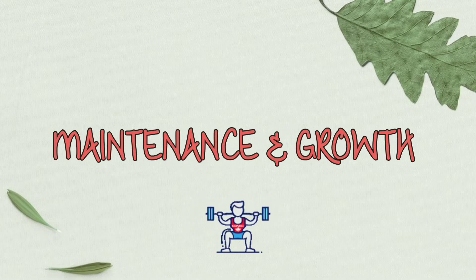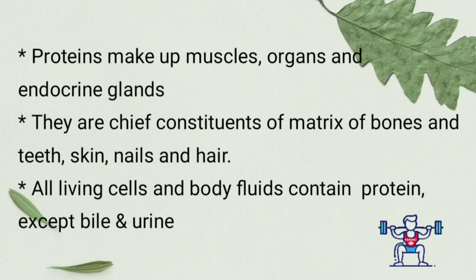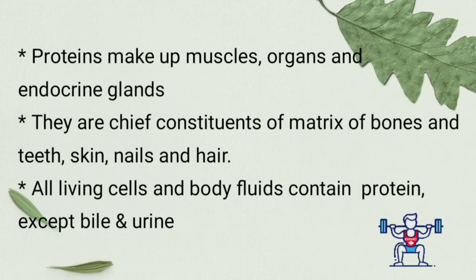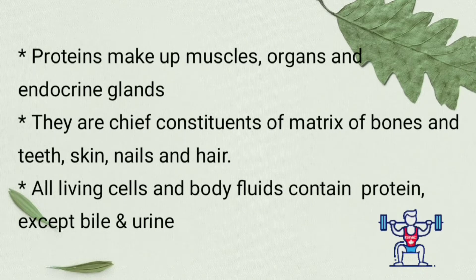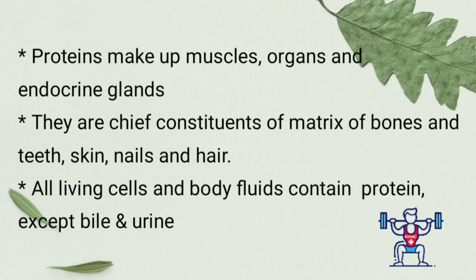First function: maintenance and growth. Protein makes up muscles, organs and endocrine glands in our body. Also, it is the chief constituent of the matrix of bones and teeth, skin, nail and hair. All these living cells and body fluids contain protein except bile and urine.